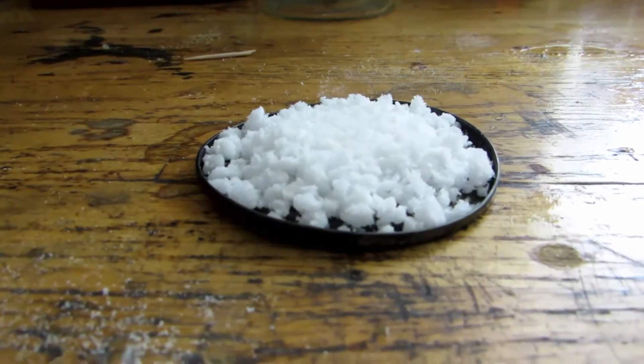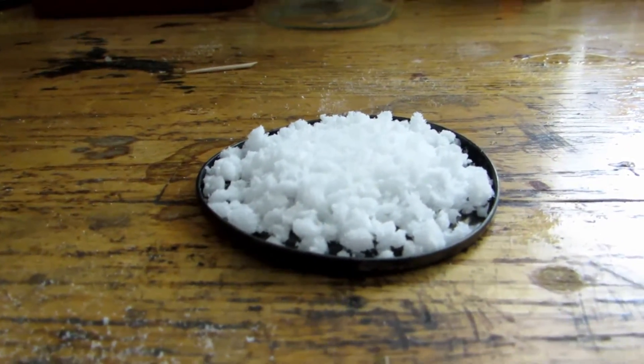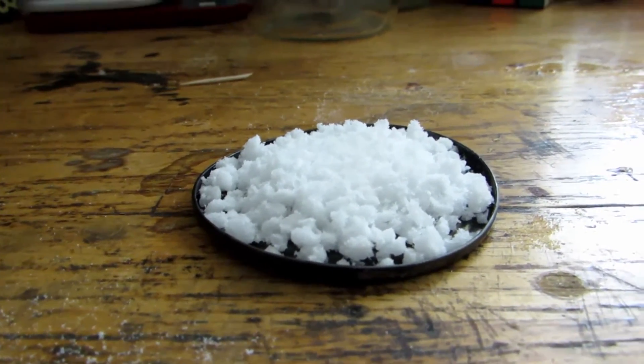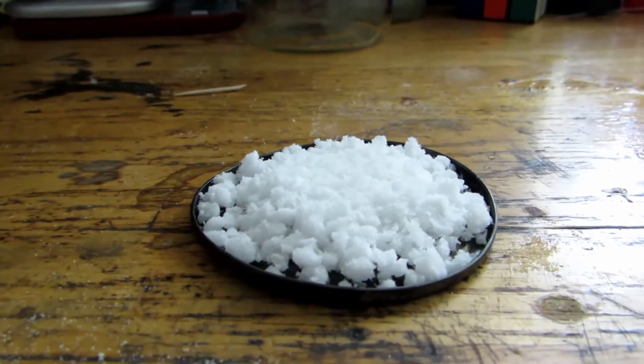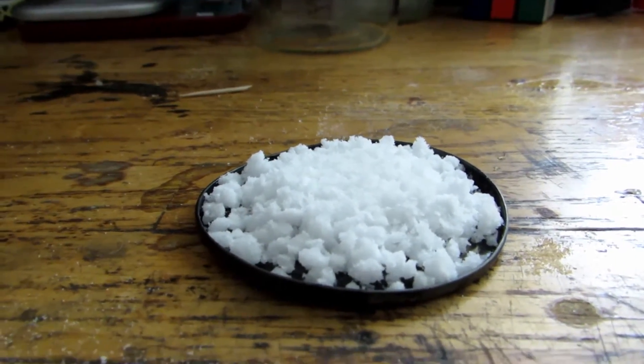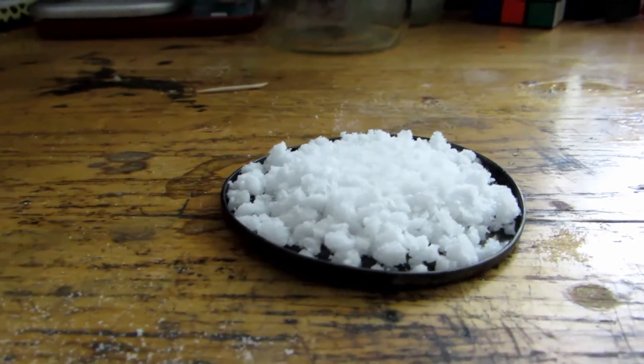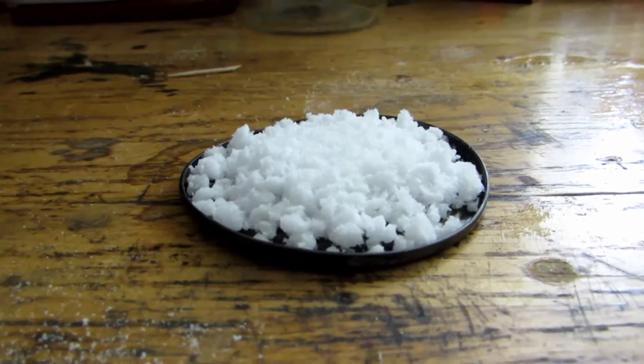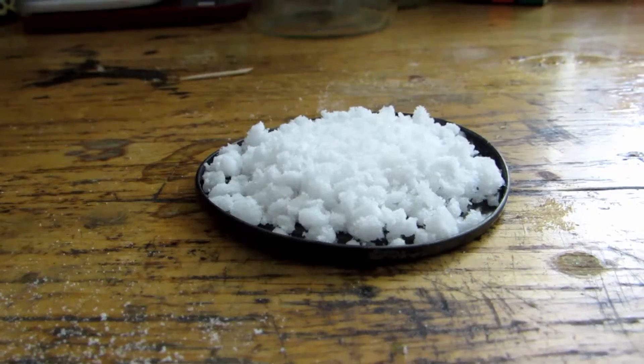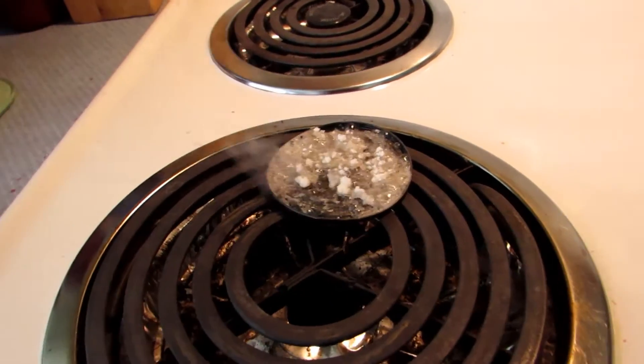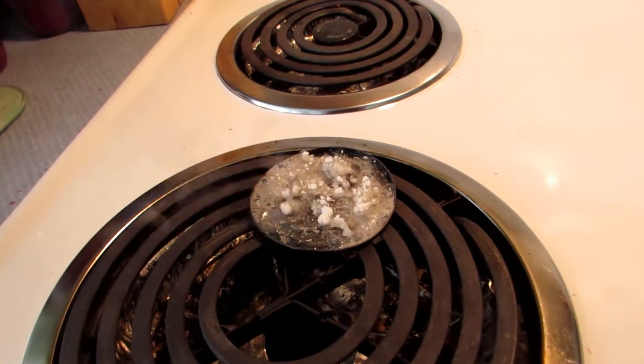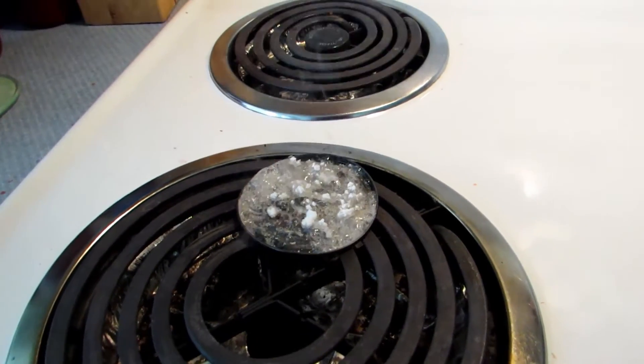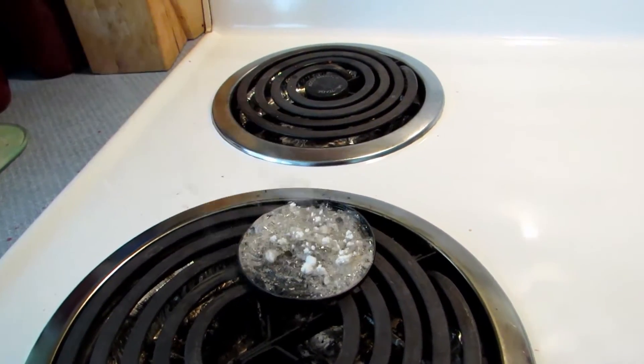Instead of using a blowtorch, I've decided to try putting it on my stove at home and just turn the stove to max temperature. This should get hot enough. We're only releasing water vapor, so nothing toxic should be produced and this should be okay to do inside. After just like five minutes on the heat, it's really bubbling and this is definitely working. We're just going to let this keep running on the stove until there's no more bubbling.